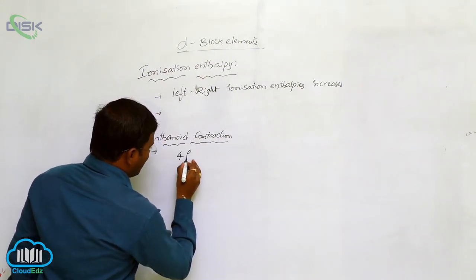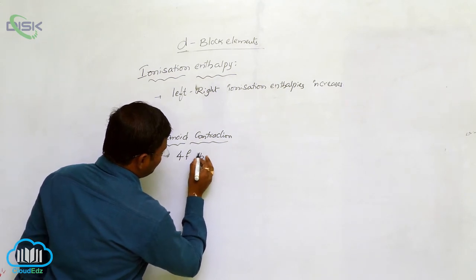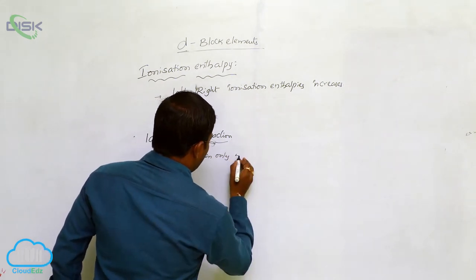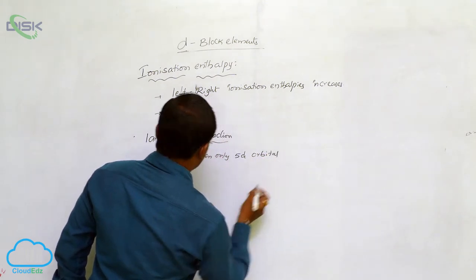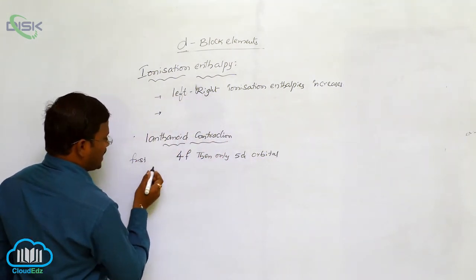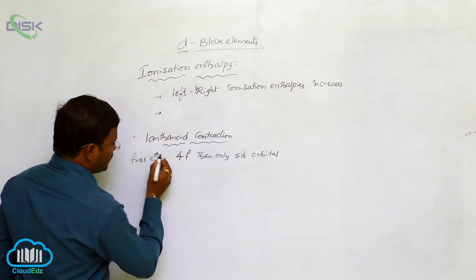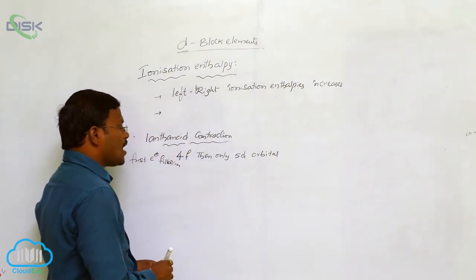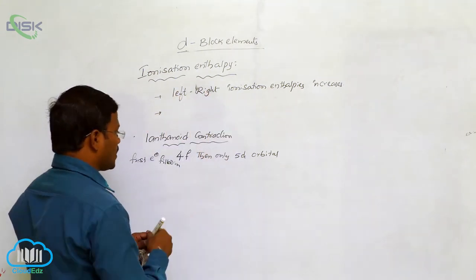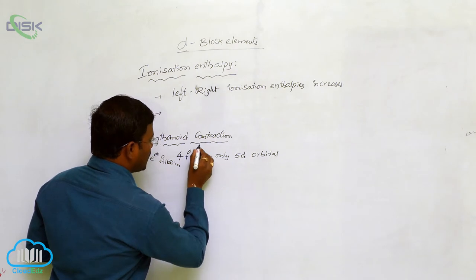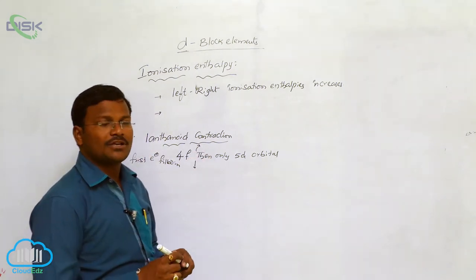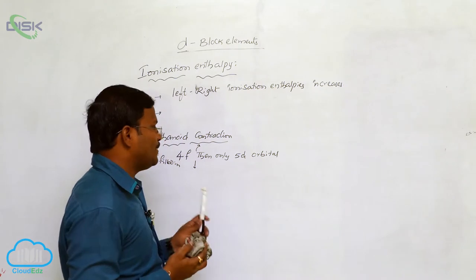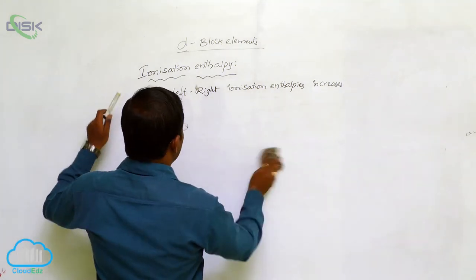While filling electrons in d-block elements, electrons first fill the 4f orbital and then only the 5d orbital. When electrons first occupy the 4f orbital followed by the 5d orbital, this concept is called lanthanide contraction. This lanthanide contraction leads to its effect on atomic radii and ionic radii in d-block elements.